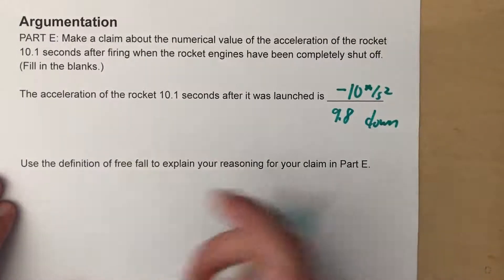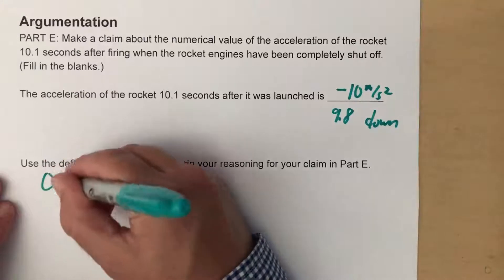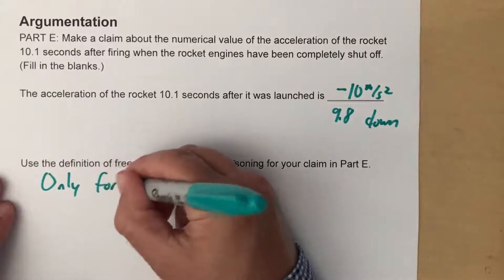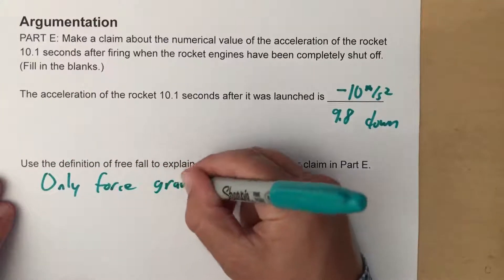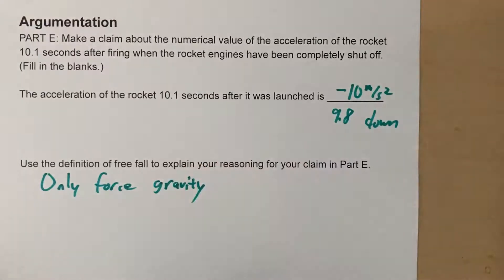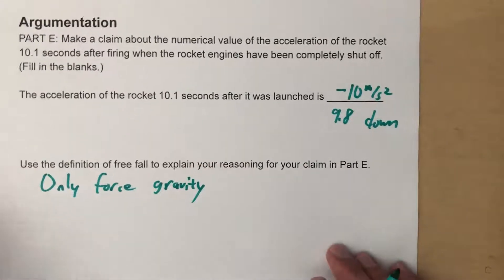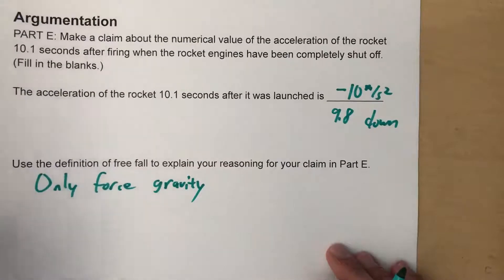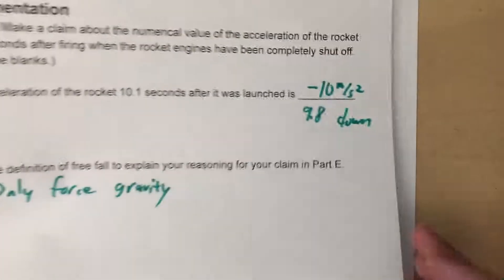Use the definition of freefall to explain your reasoning. Well, the only force in this case is gravity, and that is the definition of freefall. The force of the rocket is now gone, and there won't be any air resistance we'll assume. So it is in freefall.